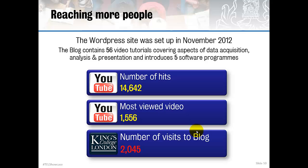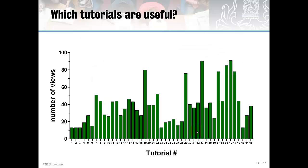We can glean much more statistical information from these videos. There's a bar chart listing 45 of the tutorials along the bottom and the number of views up the left-hand side. Using 50 views as an arbitrary cut-off point, a number of videos have reached more than 50 views, which is very satisfying. Some videos have only been viewed 12 times — and it's interesting to note that one of the MSc courses I run has 12 students on it, so clearly all of the students have visited those videos, which is great.